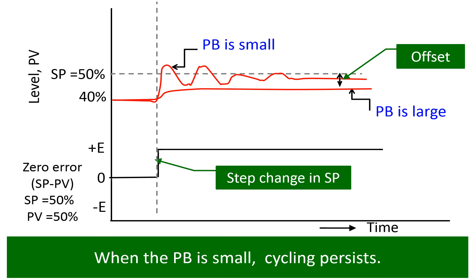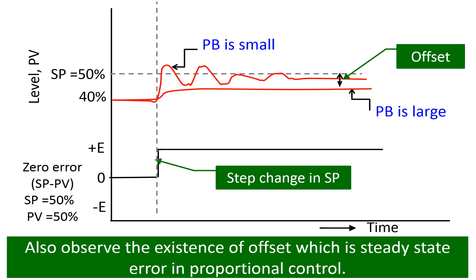When the Pb is small, you can see the cycling process. Also observe the existence of offset, which is a steady-state error in proportional control.